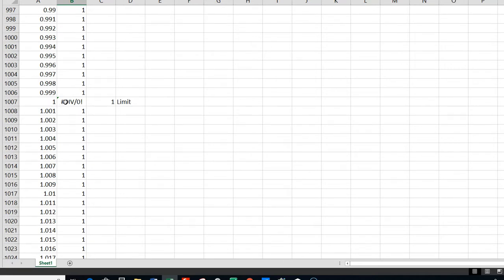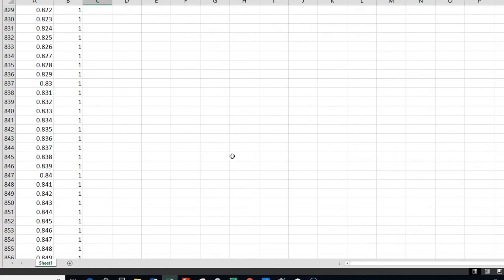And it says division by 0, which means it's undefined. Now, to get the limit, I'm going to say it's equal to the limit as it's approaching from below, and I want to take the average of the two limits plus the limit as it's approaching it the other way divided by 2. The limit is 1. And again, that's in cell C1007.